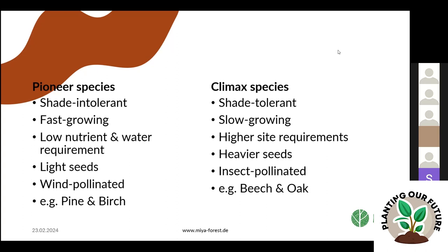Why are pioneer species fast growing? They tend not to have a very long lifespan, but more importantly, they are simply not as competitive as climax species. In order to get as much sunlight as they need — being shade intolerant — they always need to stay on top. And in order to stay on top, they have to grow faster than the surrounding tree species.